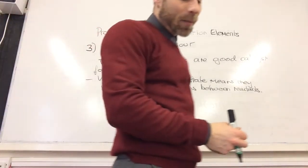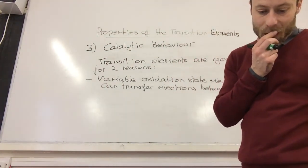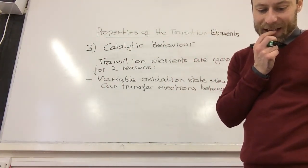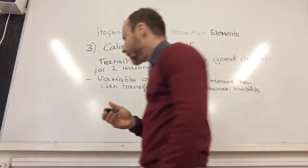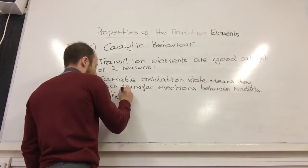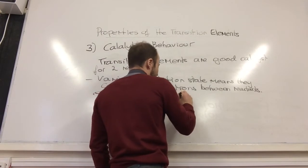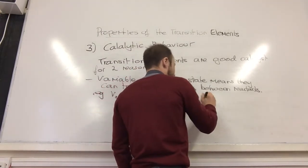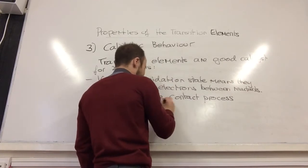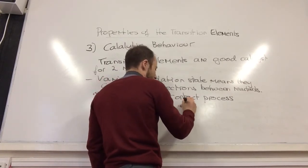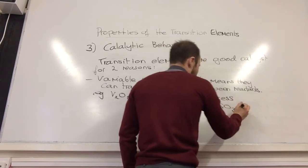And an example of that is actually in the contact process. So you have vanadium, V2O5 in the contact process, which is used to make sulfuric acid from sulfur dioxide to sulfur trioxide.